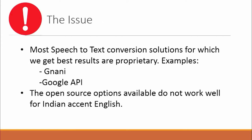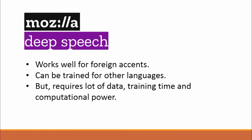Converting audio to text was a significant challenge. The options we explored were Nani API, PocketSphinx, DeepSpeech, and Google Web Speech API. Most speech-to-text solutions that gave best results were proprietary, so we had to consider open-source options — which were not well suited for Indian-accent English. They gave good results for foreign English accents, but not for Indian English accents, as they had not been trained well. We tried the DeepSpeech speech recognition model provided by Mozilla researchers — it works well for foreign accents and can be trained for other languages, but requires a lot of data, training time, and computational power.